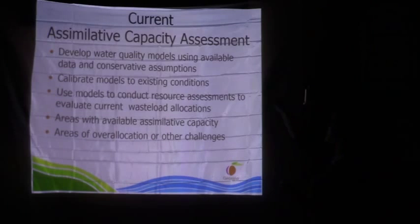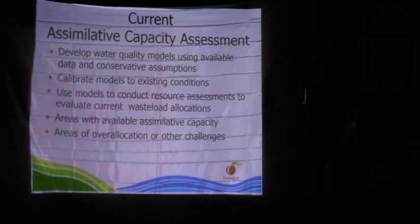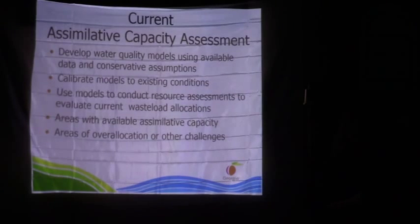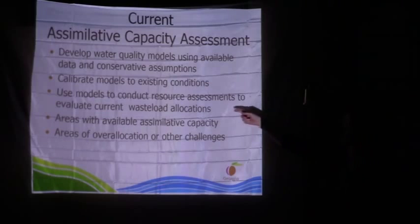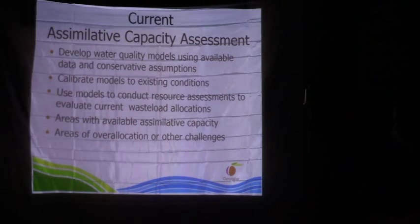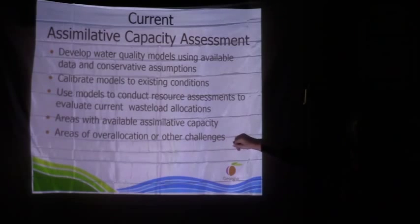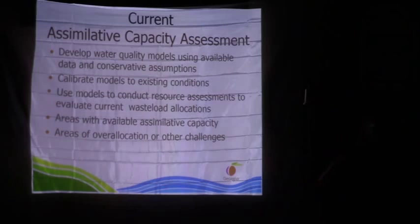We developed the current assimilative capacity using water quality models built with available data. Looking back through 2007, we calibrated those models to existing conditions — examining what wastewater dischargers were putting out, using water quality information and historic rainfall. We then ran the models with everybody at permit capacity. Under the Clean Water Act, you can't issue a permit that doesn't meet water quality standards. If we found we weren't meeting standards when issuing a permit, we had to do a TMDL and come up with new permit limits. We were finding areas that were over-allocated, where TMDLs needed to be done, or where we hadn't accounted for non-point source contributions.